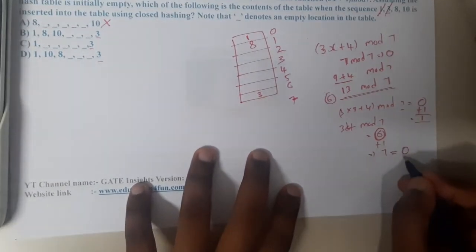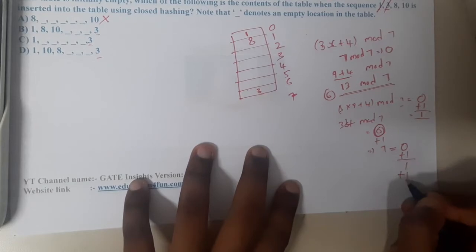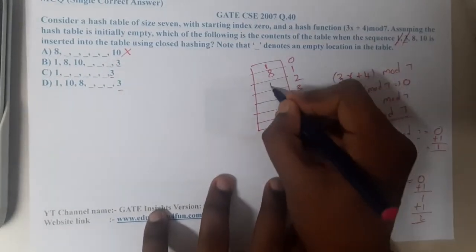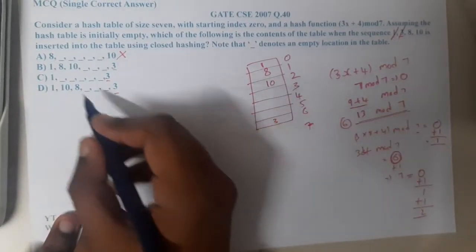If we add plus 1, that will become 7, but 7 is nothing but 0. At 0 we have a clash, at 1 we have a clash, but at 2 we don't have a clash, so 10 will take place there.